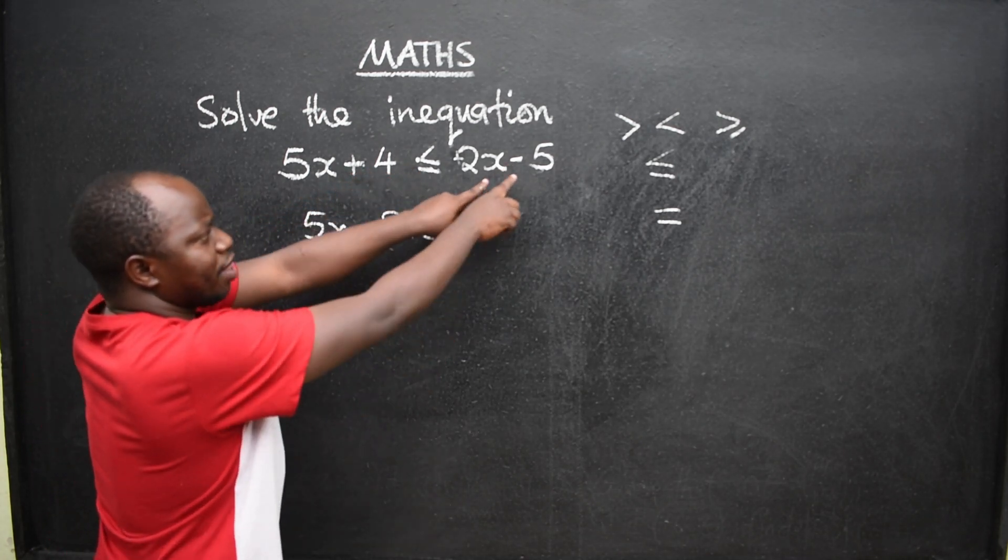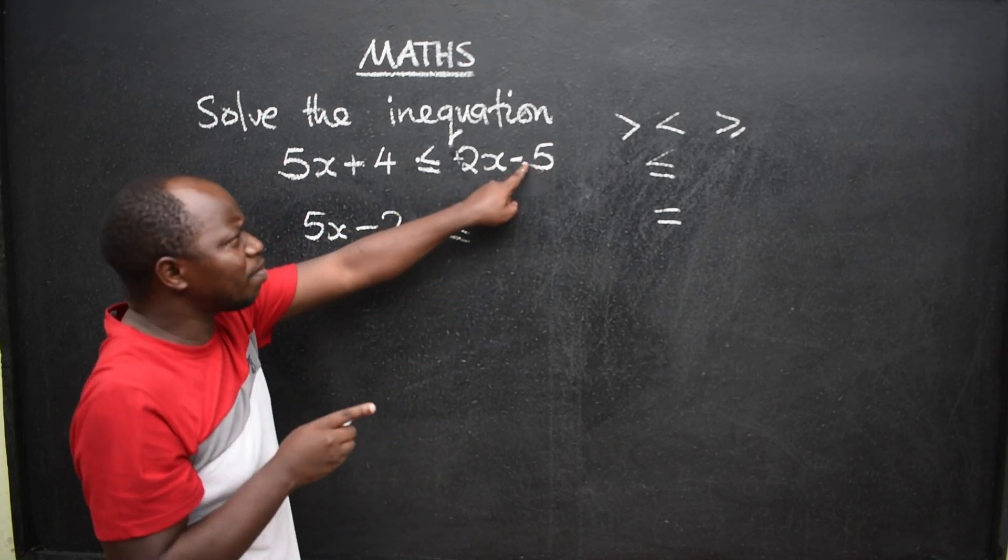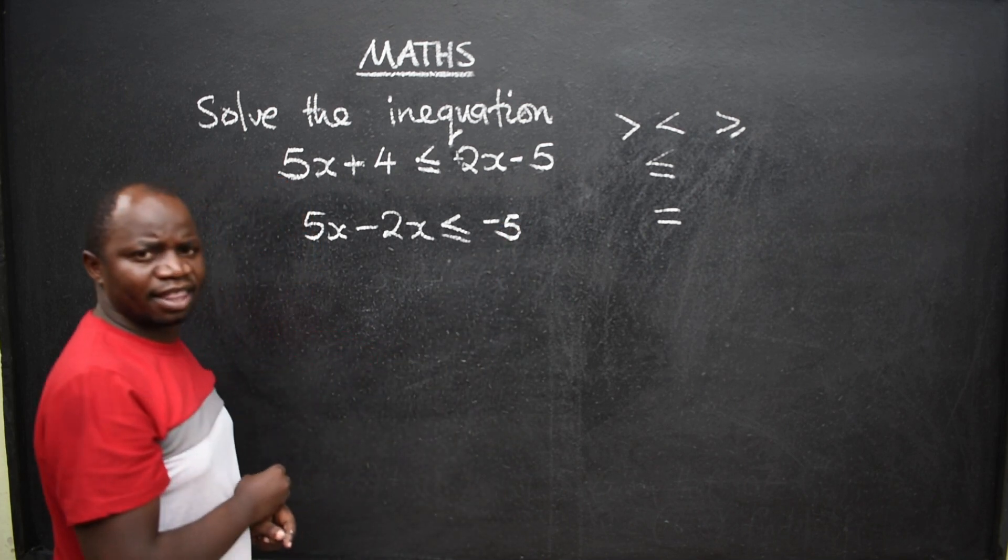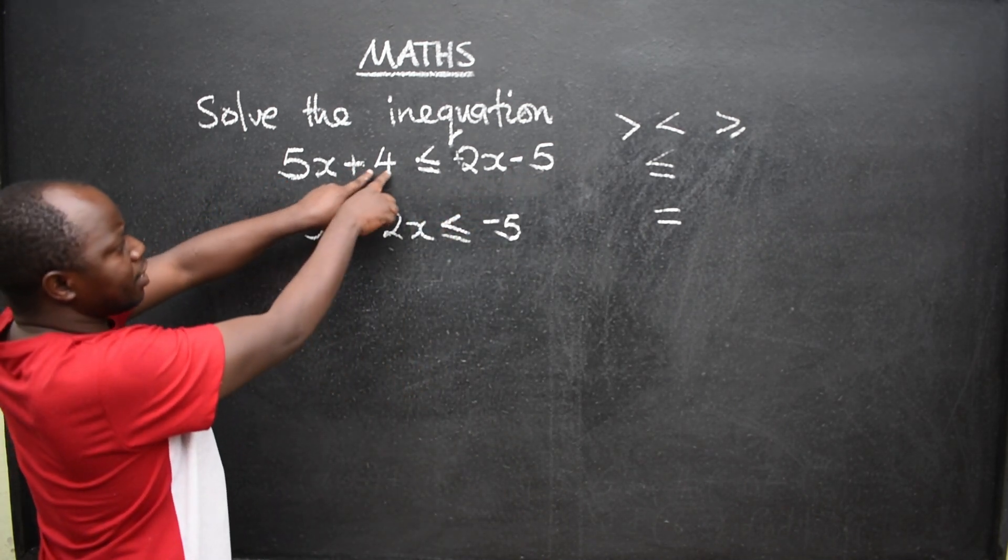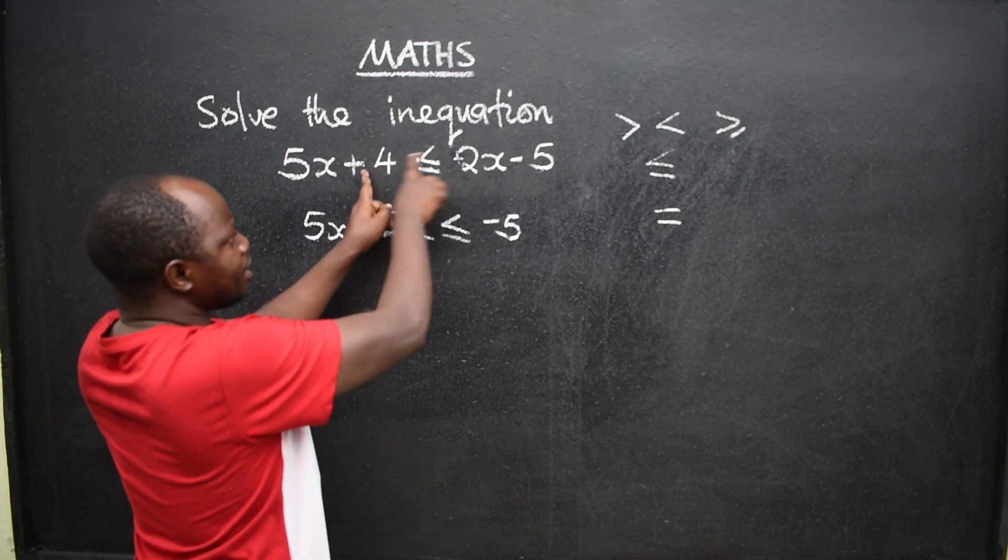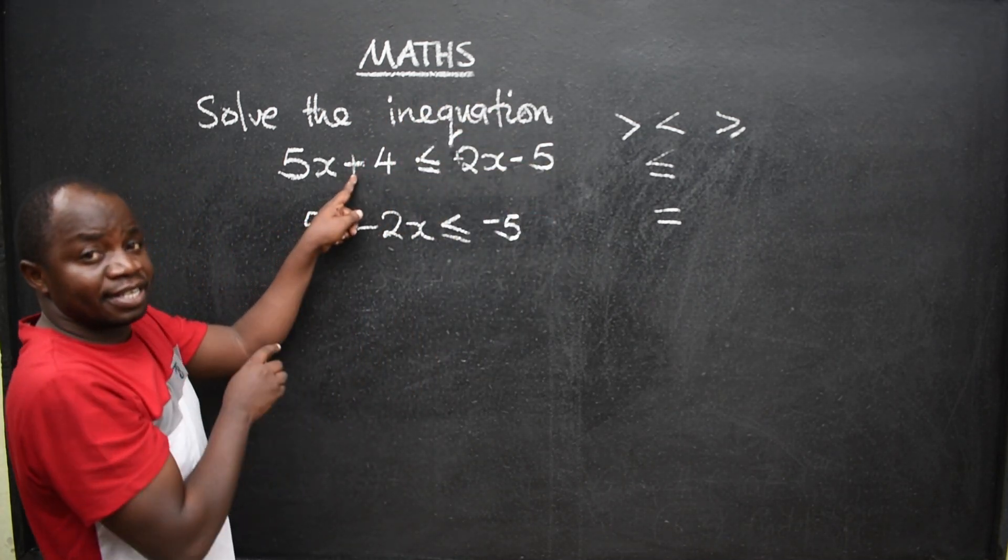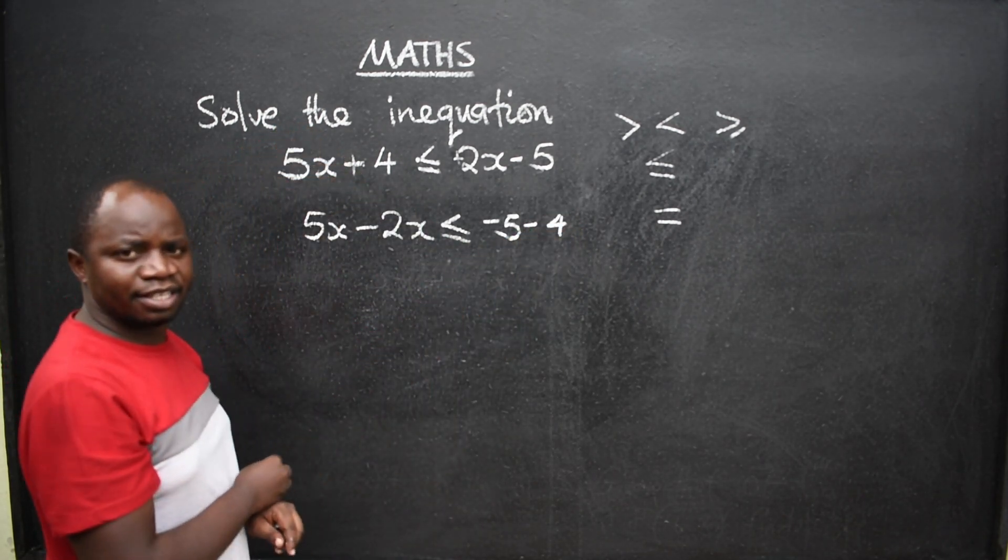Then write the symbol. What are we going to remain with? This side will remain with negative 5. You are not remaining with 5. You are remaining with negative 5. So write that negative 5 like that. Do we have a pair here? It is here. Positive 4. It crosses. This positive 4 will go on the other side. It will change the sign. So the positive will be minus 4.